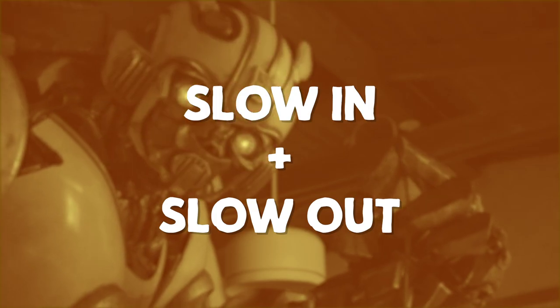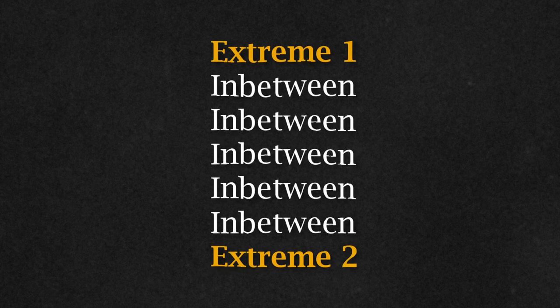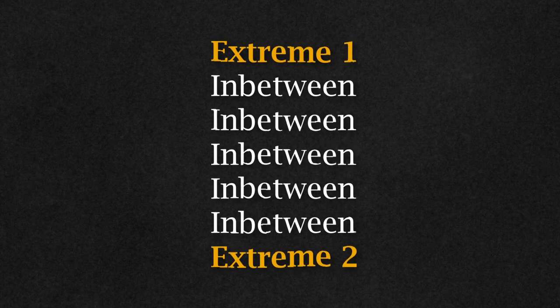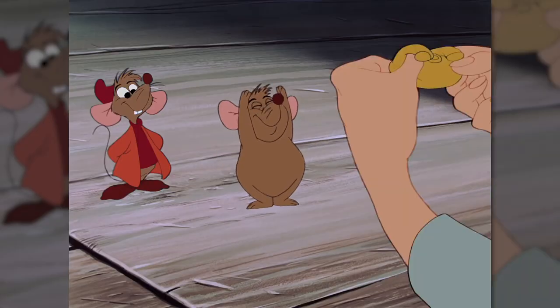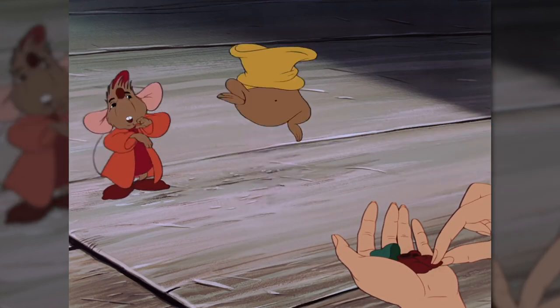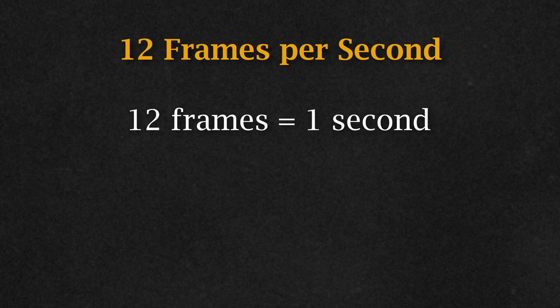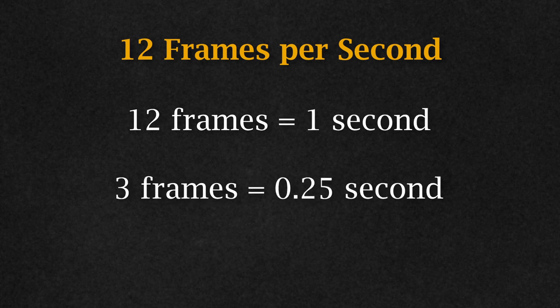Now we're halfway through the principles at number six: slow in and slow out. This goes back to the idea of extremes and in-betweens from pose to pose. If a movement is comprised of a lot of frames, it will be slower; if it's just a couple of frames, it will be snappier and quicker. For example, at 12 frames per second, an action made up of 12 frames takes 1 second to complete, while an action made up of 3 frames takes just 250 milliseconds.